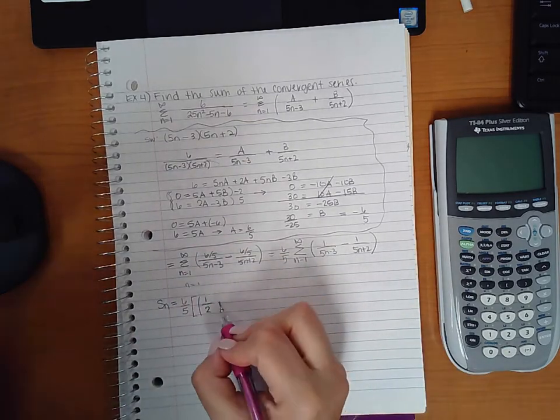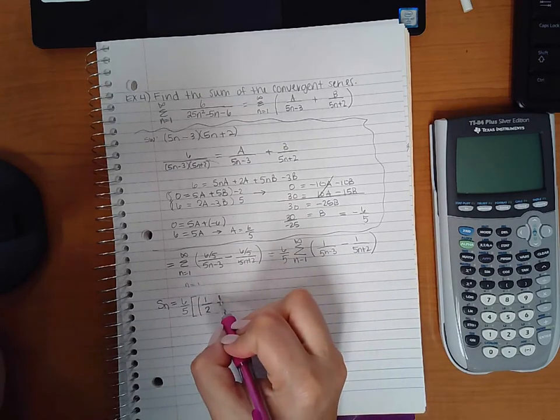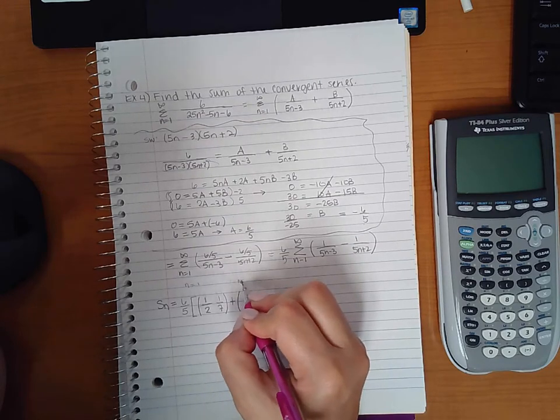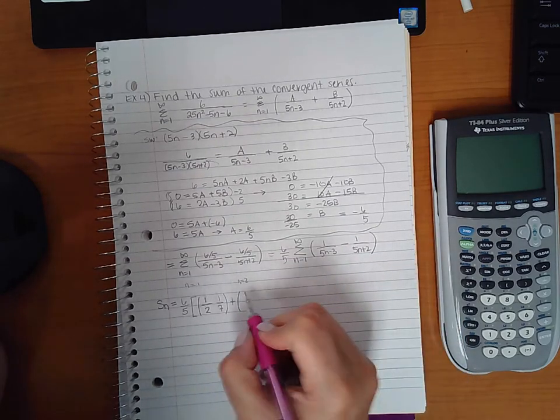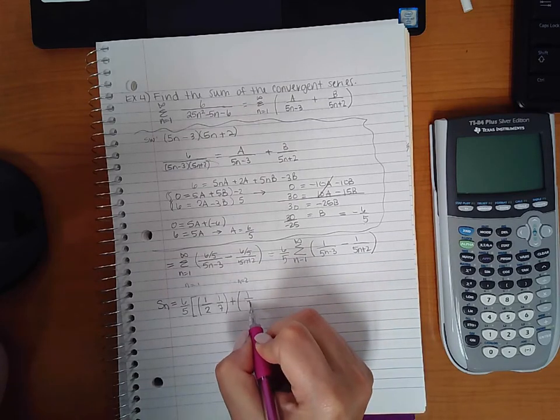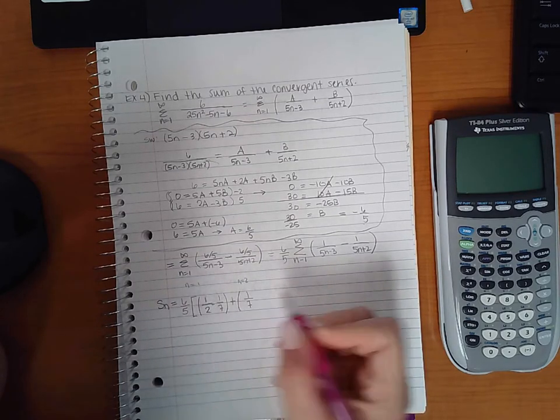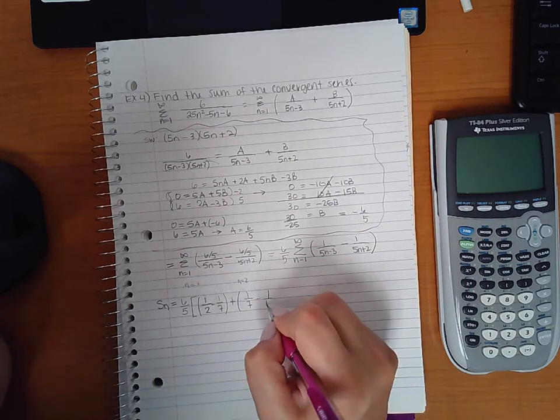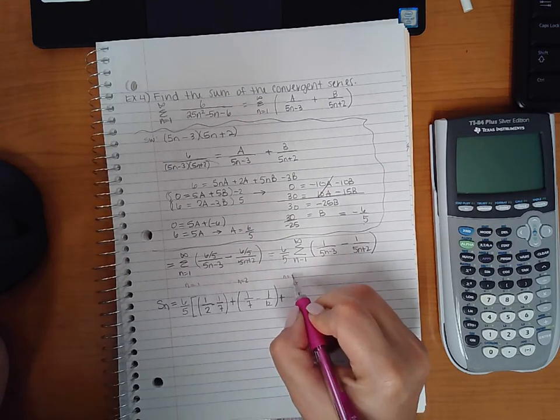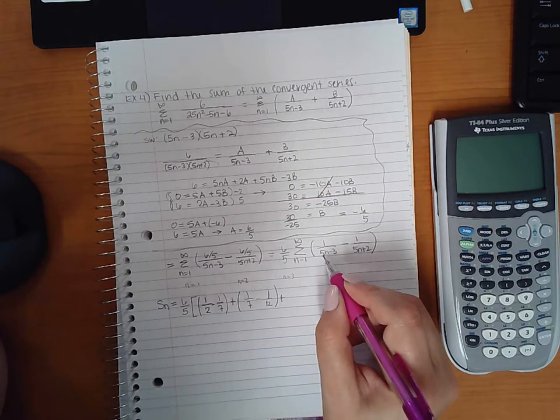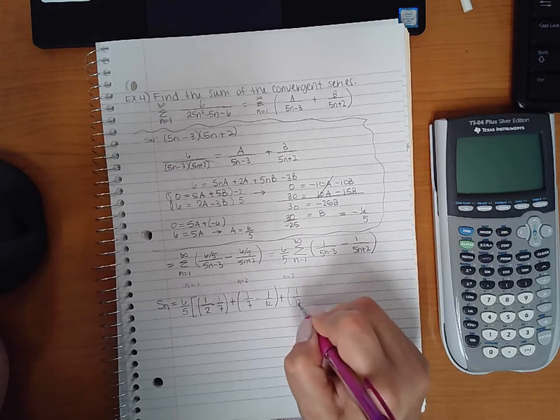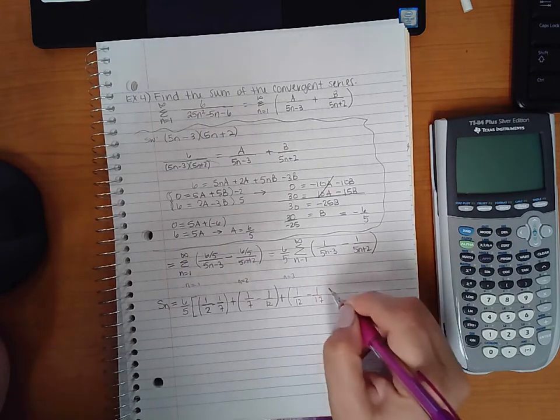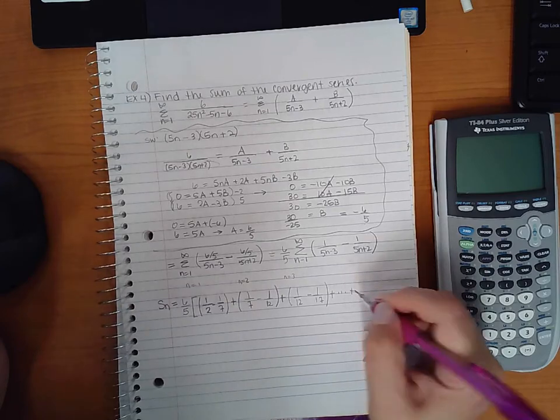And then when I plug in 1 here, I'm going to get 5 plus 2, which is 7. Then I'm going to add what I get when n equals 2. So here if I plug in 2, I get 10 minus 3, which is 1 seventh. And there is a minus sign in between there. When I plug in 2, I get 12. If I keep going, n equals 3, that would be 15 minus 3, which is 12, and then 15 plus 2, which is 17.